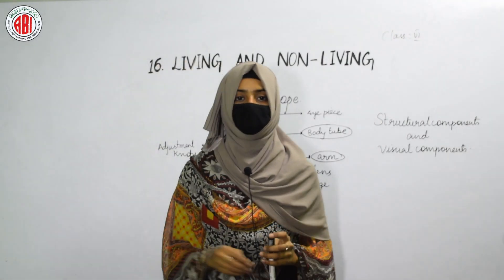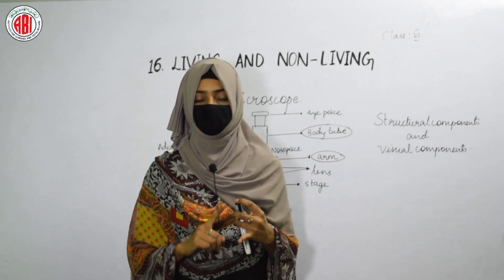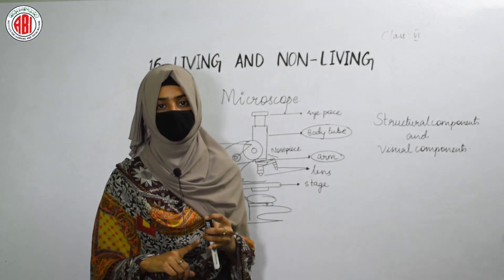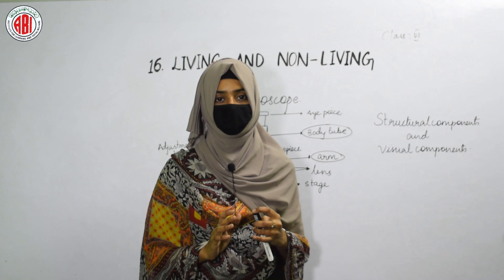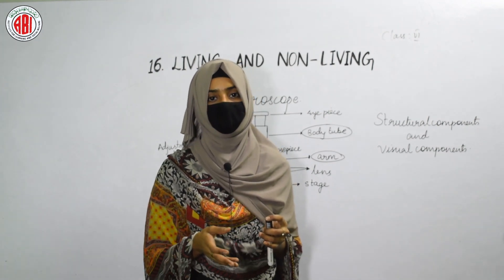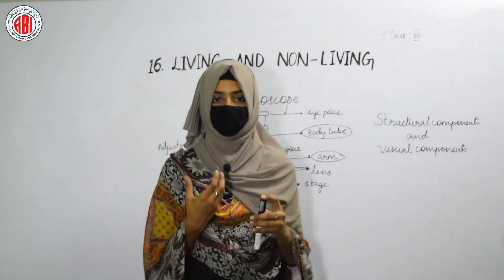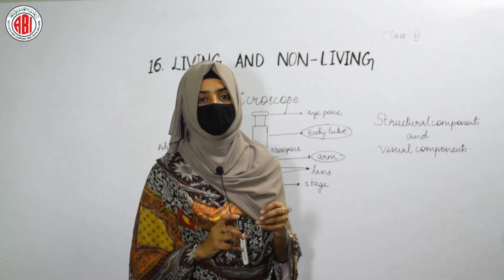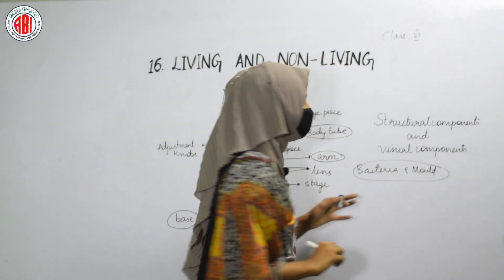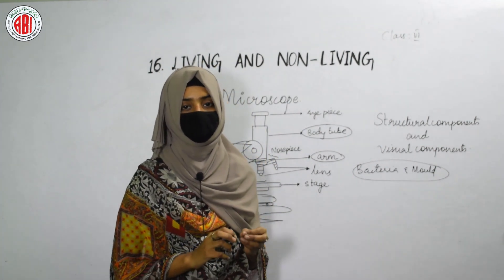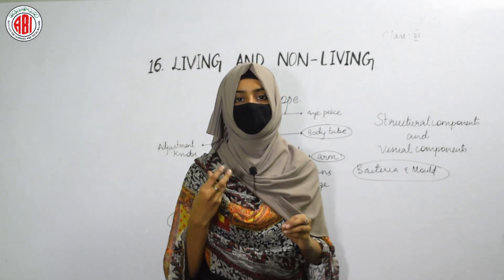Now let us talk about microorganisms. Living things include plants, animals, human beings, and microorganisms. Microorganisms are minute, very tiny living organisms. They share similar characteristics with other living organisms, which is why they are included among living organisms. We cannot see microorganisms with our naked eye. To see them we need an instrument called a microscope. Microorganisms include tiny organisms like bacteria and mold.